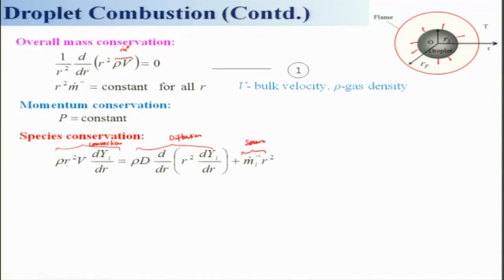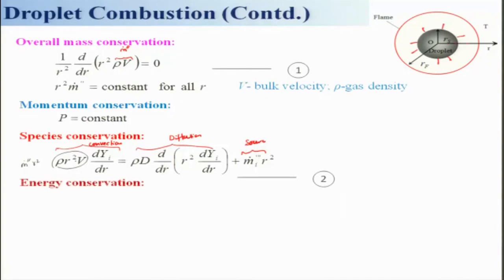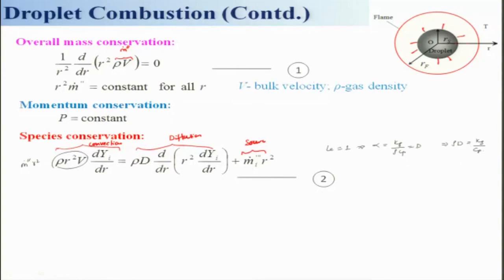The convection term can be written as ṁ″r² since ρv is the mass flux. If the Lewis number equals 1 — meaning α/D = 1, i.e., (k_g / ρc_p) / D = 1 — then we can substitute ρD = k_g/c_p. We will use that later on.